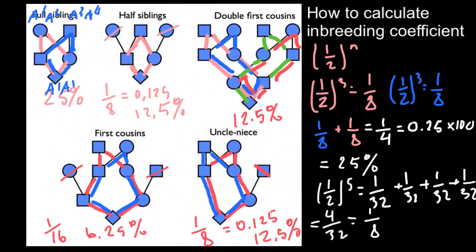So as you see, the calculations are pretty easy. You just have to find which people to exclude, and then find all the alternative routes leading to the person of interest. Then use the formula (1/2)^n to calculate the inbreeding coefficient. If you have alternative routes, add all the probabilities to get the final answer. If you need the answer in percentage form, multiply the decimal answer by 100.